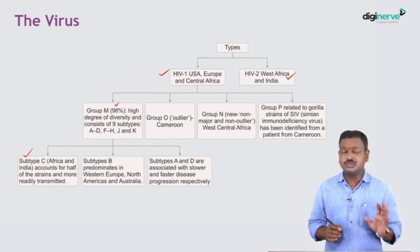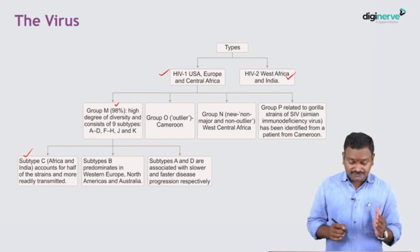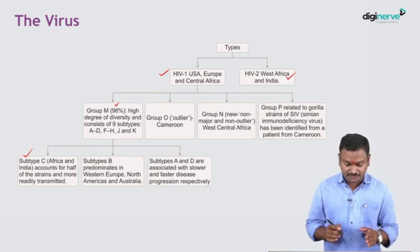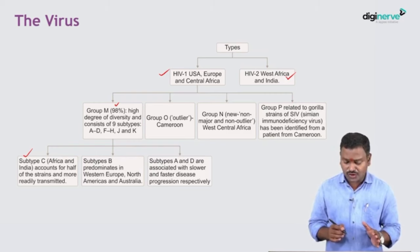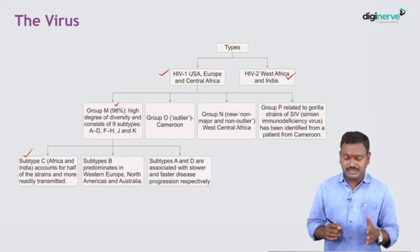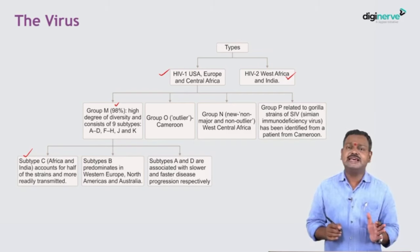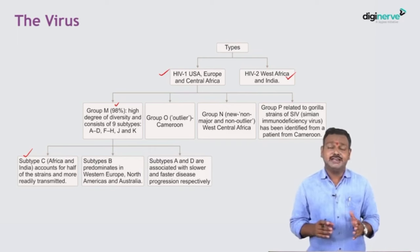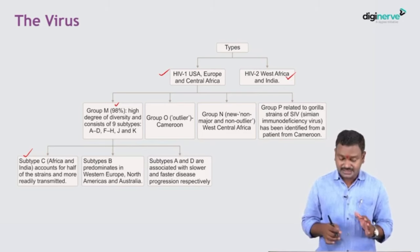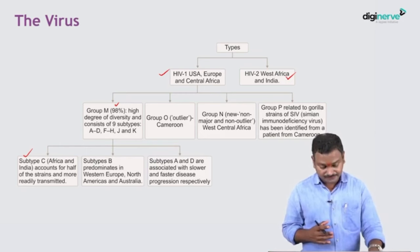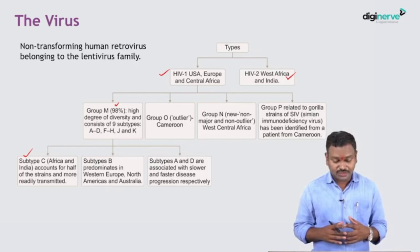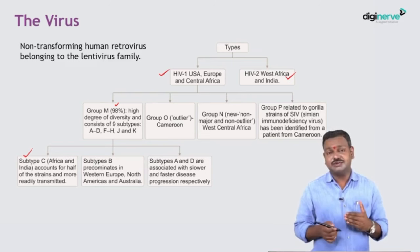HIV-1 also has group O (outlier), predominantly in Cameroon; group N (non-major, non-outlier), identified in West Africa; and group P, directly related to the simian immunodeficiency virus, localized to Cameroon. HIV-2 subtypes are not yet fully defined. Both HIV-1 and HIV-2 belong to the lentivirus family of non-transforming human retroviruses.